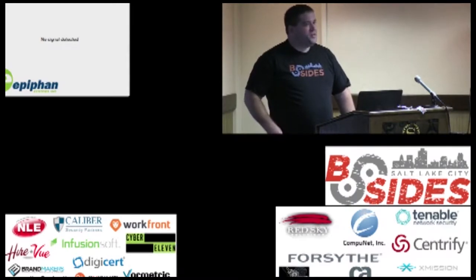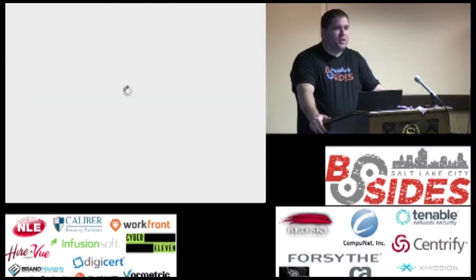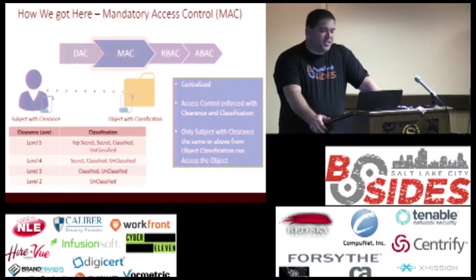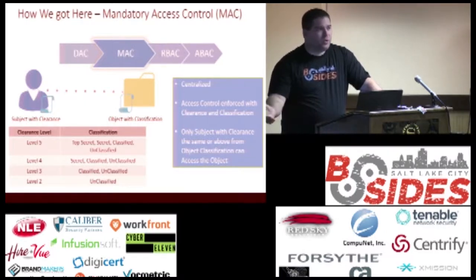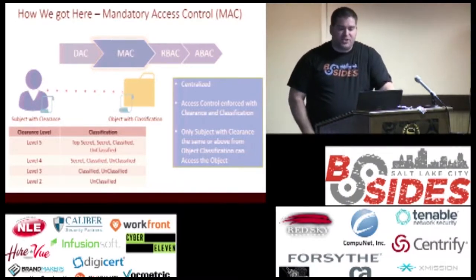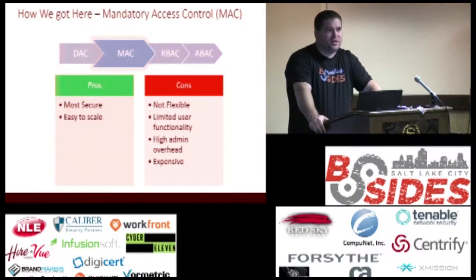Another model that came around early on was Mandatory Access Control — MAC. This is where we get to data classification, which the government and defense department use. We're all familiar with top secret, secret, classified, unclassified levels. A subject with clearance at the same or above the object's level has access. If I've got top secret clearance, I can read everything below and write top secret. If I'm unclassified, I can't read above and can only write unclassified information. Pros: it's more secure and scales easier. Cons: limited user functionality, expensive to implement, and high administration overhead because you're constantly looking at and updating the classified data.